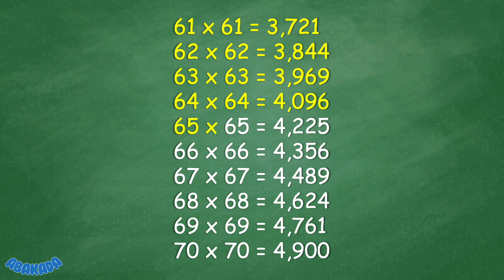65 times 65 equals 4,225. 66 times 66 equals 4,356. 67 times 67 equals 4,489. 68 times 68 equals 4,624. 69 times 69 equals 4,761.